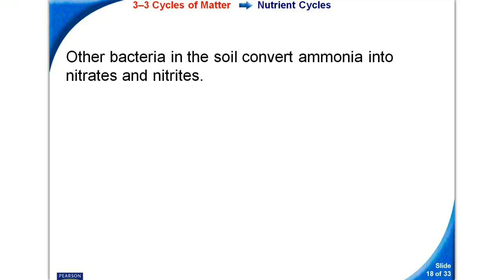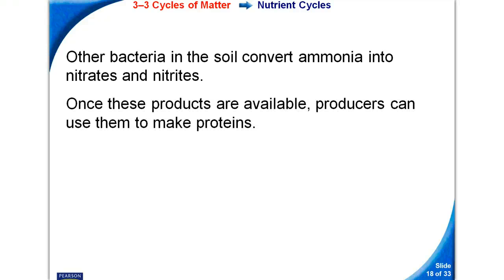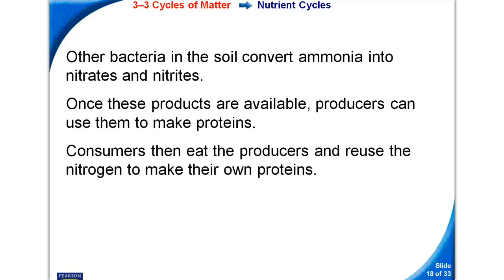Other bacteria in the soil convert ammonia into nitrates and nitrites. Once these products are available, producers can use them to make proteins. Consumers then eat the producers and reuse the nitrogen to make their own proteins.